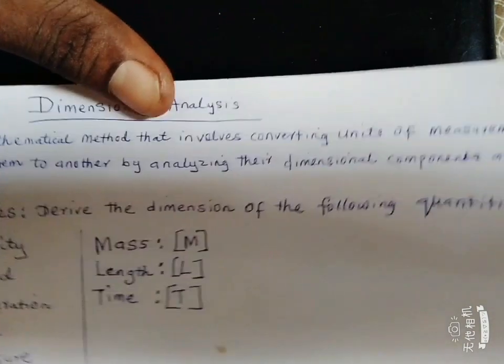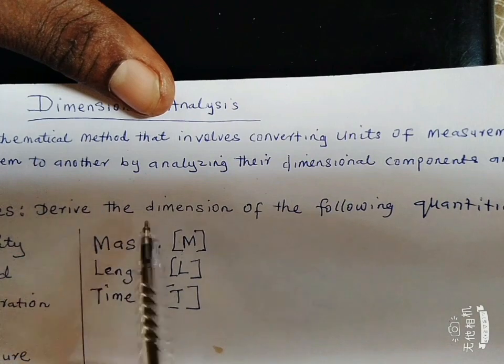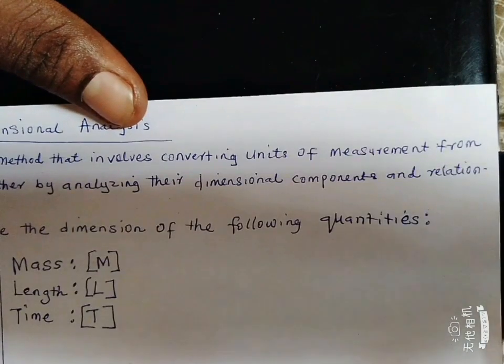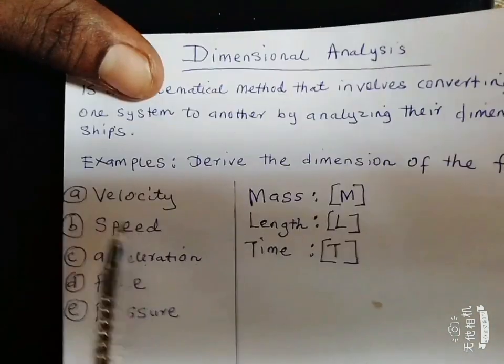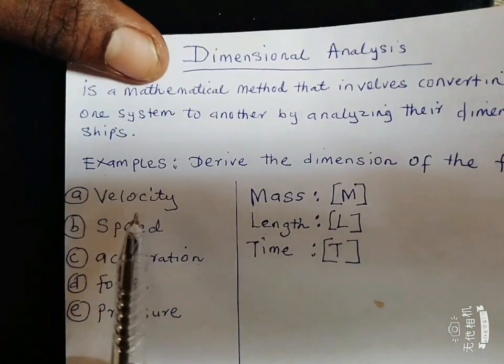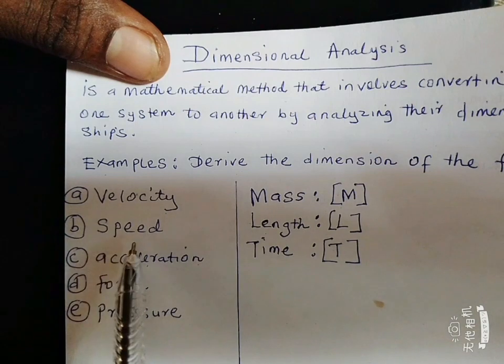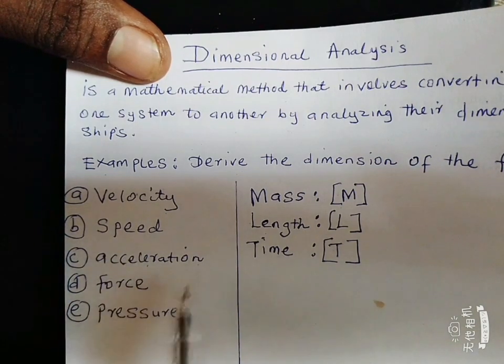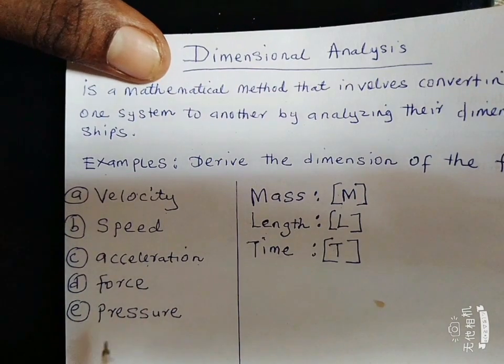Now, examples: Derive the dimension of the following quantities. We have the first one, velocity. We have the second one, speed. We have the third one, acceleration. We have the fourth one, force. We have the fifth one, pressure.